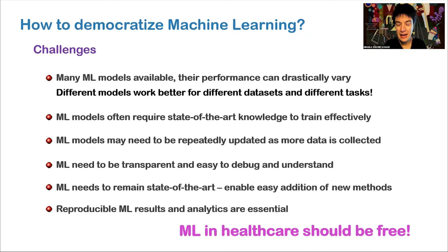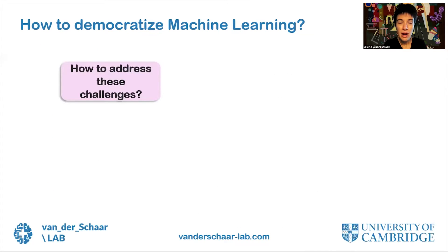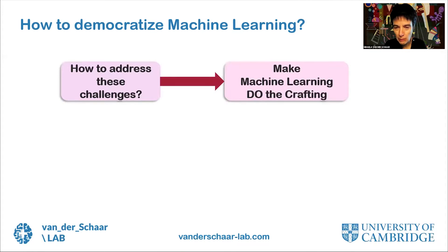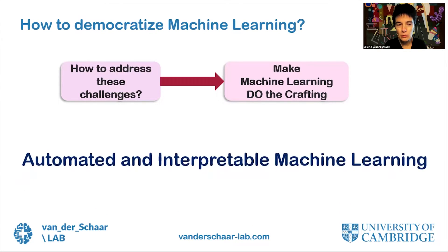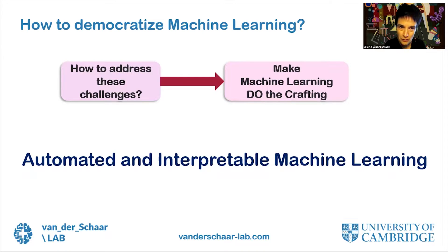An important challenge in healthcare is to build risk scores that are free and do not require monetization, so that everybody can use these tools to improve healthcare worldwide. We have been thinking about this problem for many years and feel the best way is to let machine learning itself do the crafting of such models — relying on automated and interpretable machine learning. This is a very vibrant area of research; in fact, earlier this summer we had the world's first automated machine learning conference.